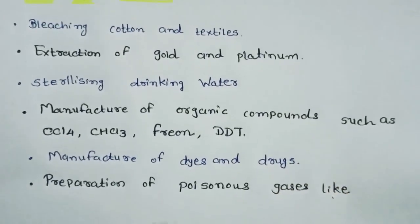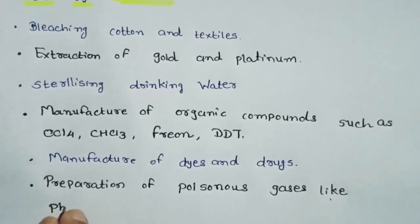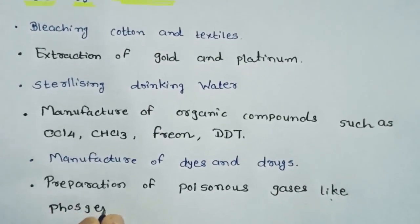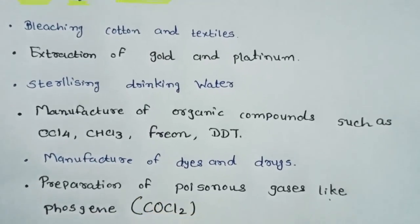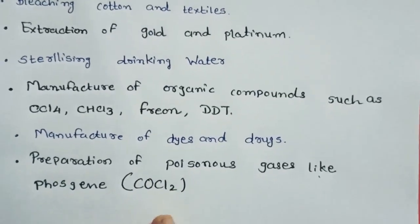Poisonous gases like phosgene. The formula of phosgene is COCL2. It is used in the preparation of phosgene.